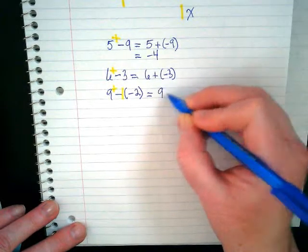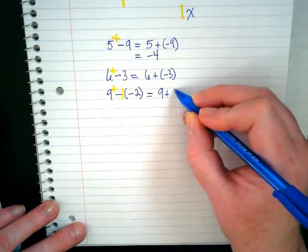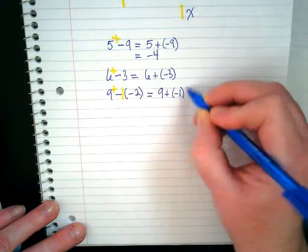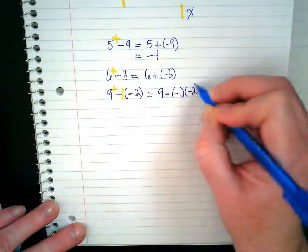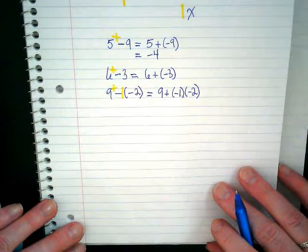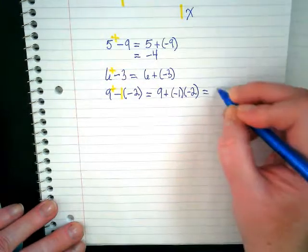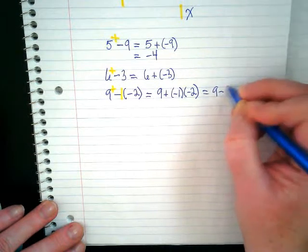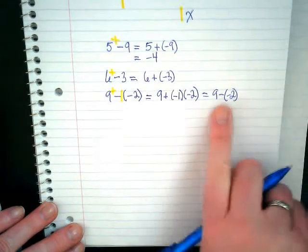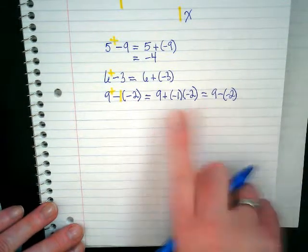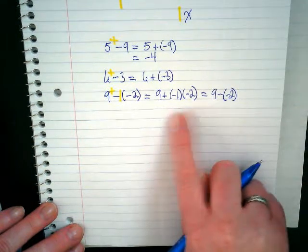Nine plus negative one times negative two. When I have nine minus negative two, this is my shortcut way of writing all of this. Does that make sense?